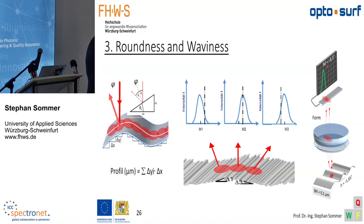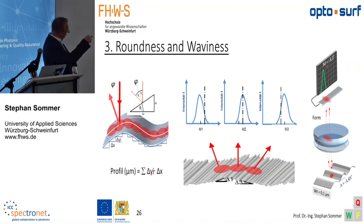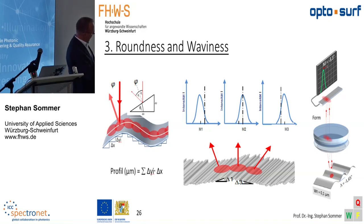The next step is how to measure roundness and waviness. Looking at the wavy surface: the light comes down and reflects at an angle. Going up the wave reflects the light to the left, so the distribution shifts to the left. On top of the wave, the reflection is in the middle. Going down the wave, the reflection shifts to the right.